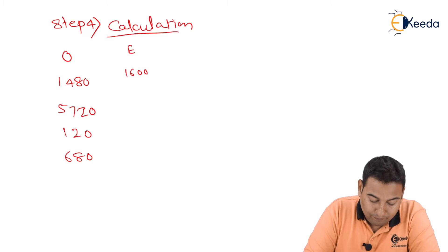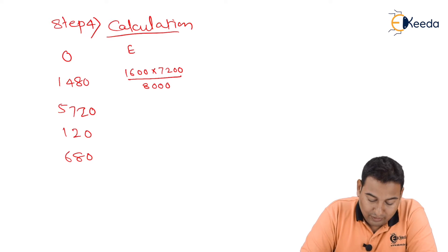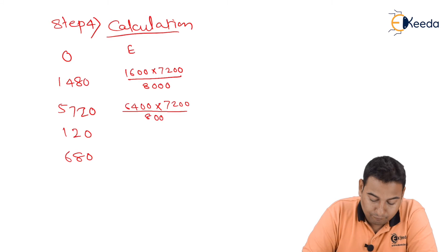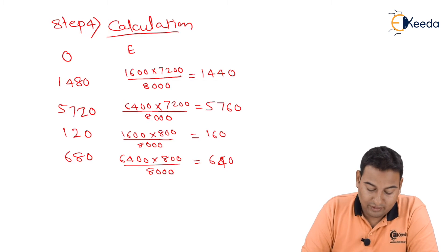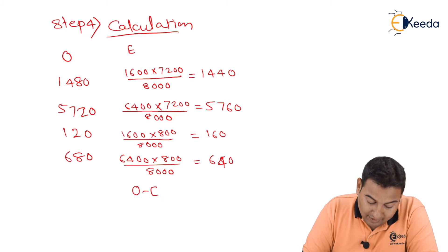For 120 it is 1600 into 800 upon 8000, and the last value is 6400 into 800 upon 8000. So if you simplify, you will get 1440, 5760, 160, and 640. So these are the expected values.